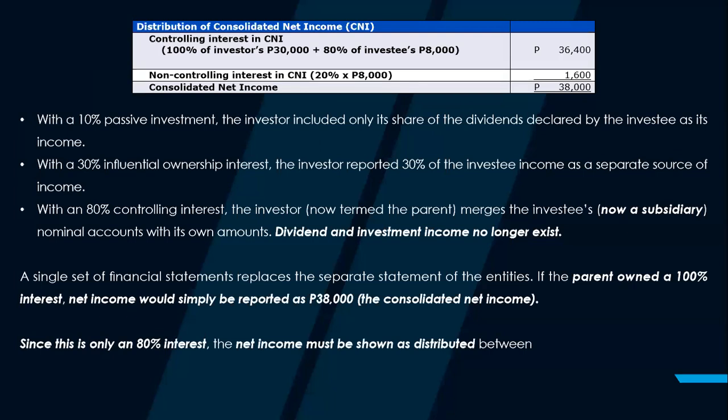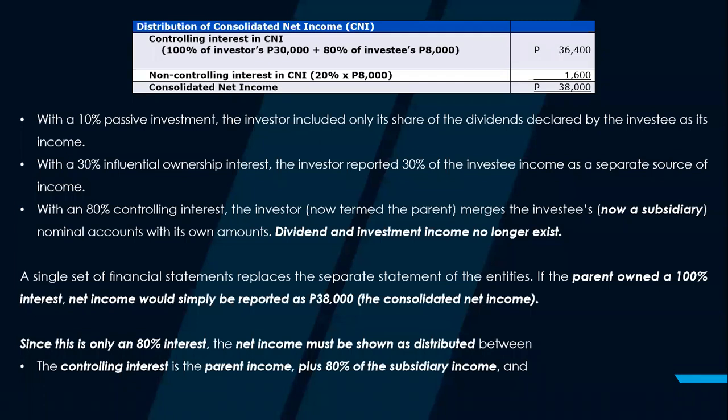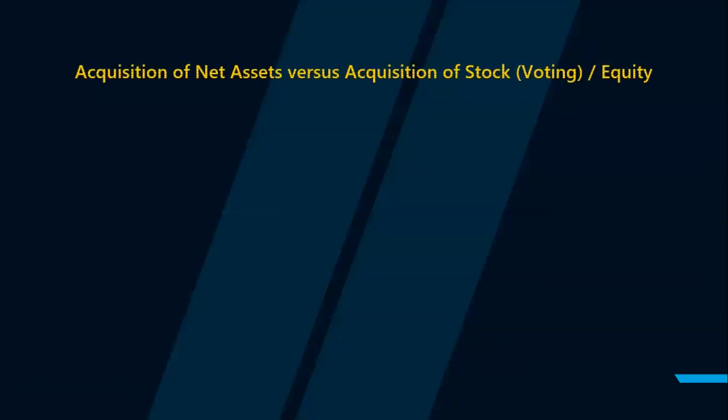Since this is only an 80% investment, the net income must be shown as distributed between the controlling interest — that's the parent's income plus 80% of the subsidiary's income — and the non-controlling interest, which is the 1,600 share of the non-controlling or minority interest.